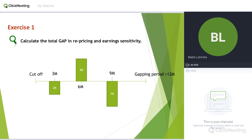As an exercise, I would like you to calculate the total gap in repricing and also the NII sensitivity based on the equation provided: gap multiplied by shock multiplied by time factor. Consider whether this is a positive, asset-sensitive position and what the treasurer of this bank should be aware of. If it is liability-sensitive, what should the treasurer do to manage the exposure?